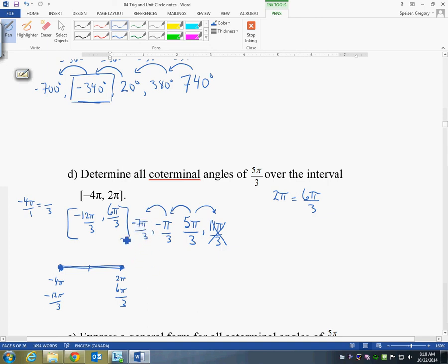If I subtract another set of 6π/3, so if I subtract another 6, I would get negative 13π/3. And that is too far negative. So this is too far. So determine all coterminal angles of 5π/3. So the answer are these three right here. These are my three answers.